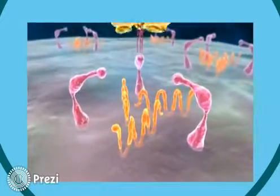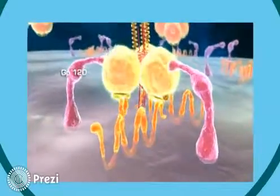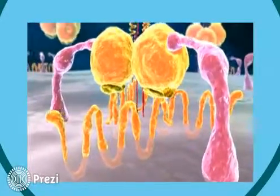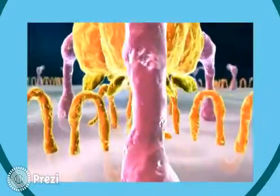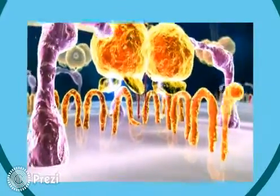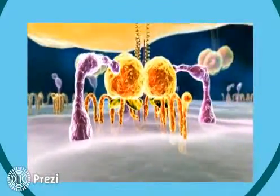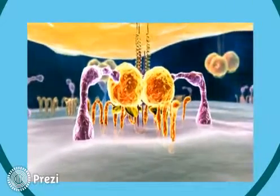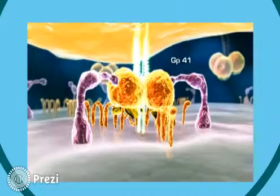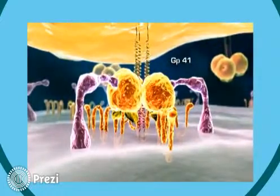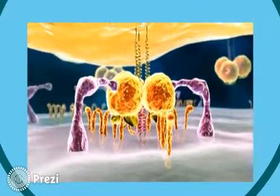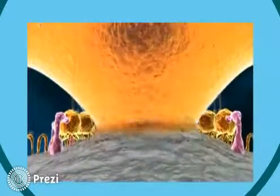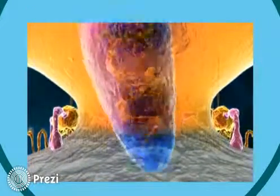The GP120 subunit of the envelope protein first binds to CD4, the primary receptor. This induces a conformational change in GP120 that allows it to bind to the co-receptor. Co-receptor binding then triggers conformational changes in the GP41 subunit, leading to insertion of its N-terminal fusion peptide into the host cell's membrane. Fusion results in release of the viral genome into the cytoplasm.